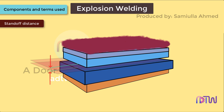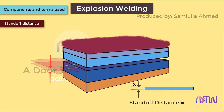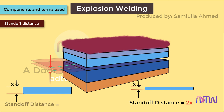Standoff distance: the distance or gap between the flyer plate and the base plate is called the standoff distance, and it plays a very important role in forming a weld. For a thin flyer plate, the standoff distance is taken as double the thickness of the flyer plate. For a thick flyer plate, the standoff distance is equal to the thickness of the flyer plate.